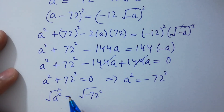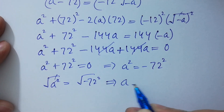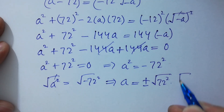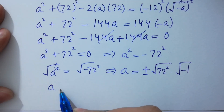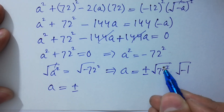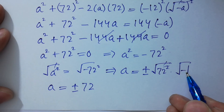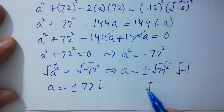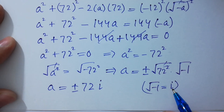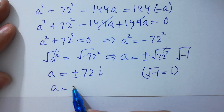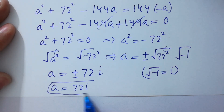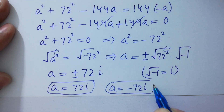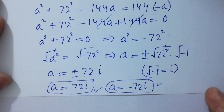The square cancels from the square root. We have a equal to plus or minus square root of 72 squared times square root of minus 1. A equal to plus or minus 72 times square root of minus 1. Square root of minus 1 equals i from complex numbers. So we have a equal to 72i and a equal to minus 72i — two complex solutions, no real solution.